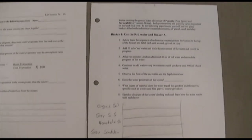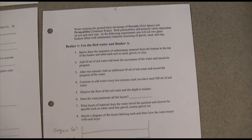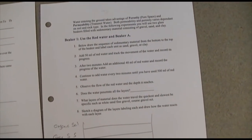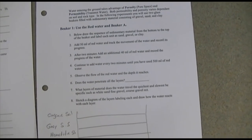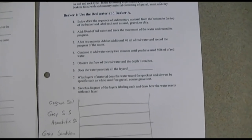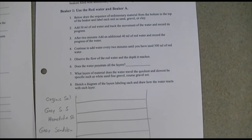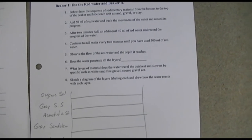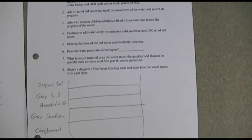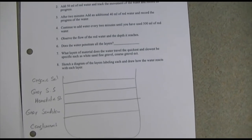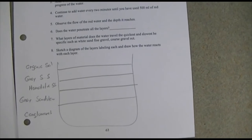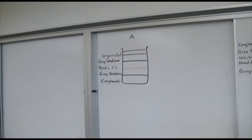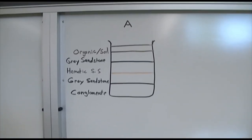Add 50 milliliters of red water and track the movement of the water, recording its progress. After two minutes, add an additional 40 milliliters and record progress again. Continue adding water every two minutes until you've used 500 milliliters. Observe the flow and depth it reaches. Key questions: does the water penetrate all layers? What layers does the water travel quickest and slowest through?